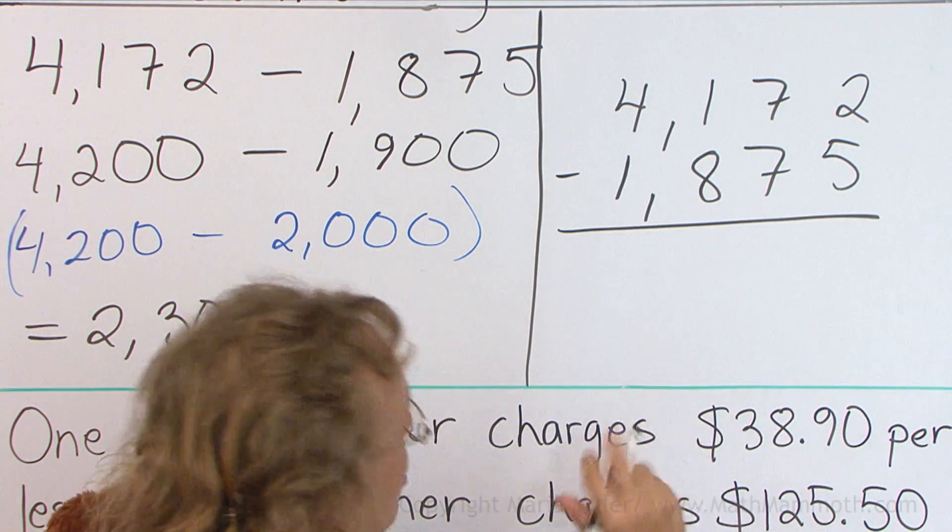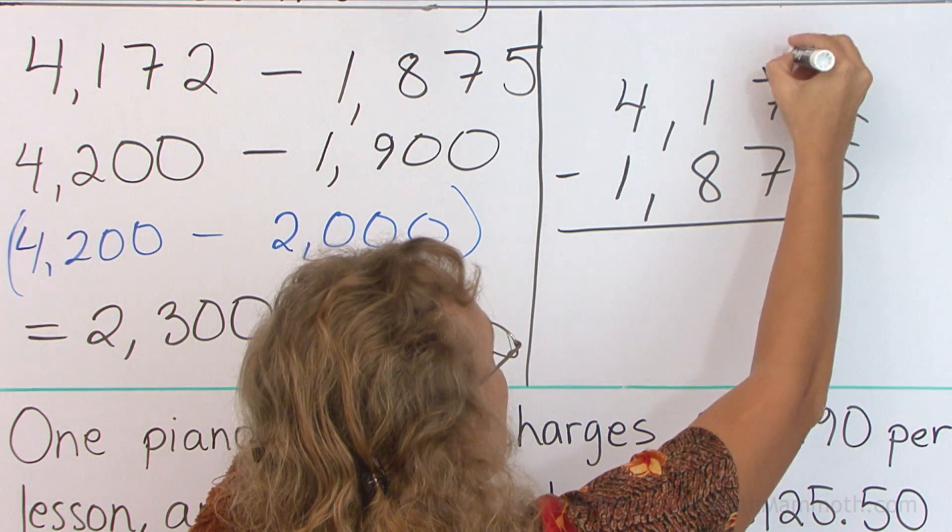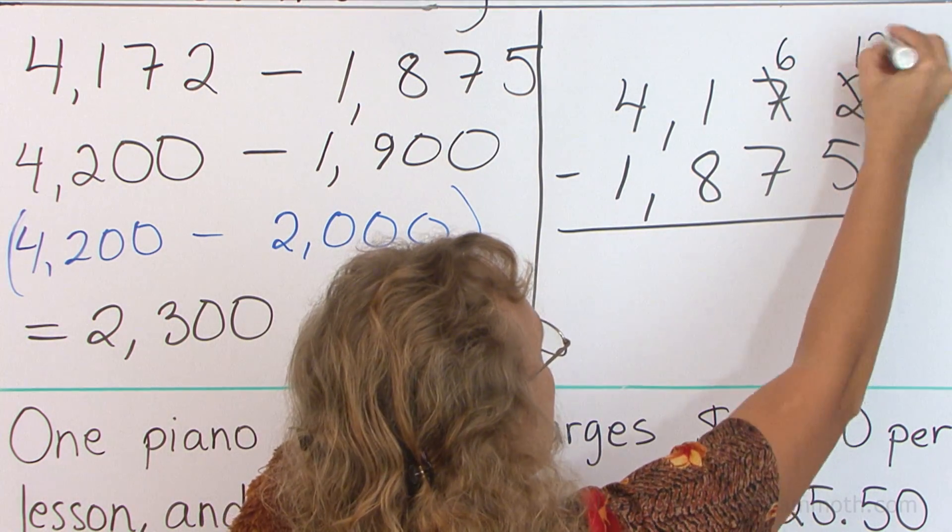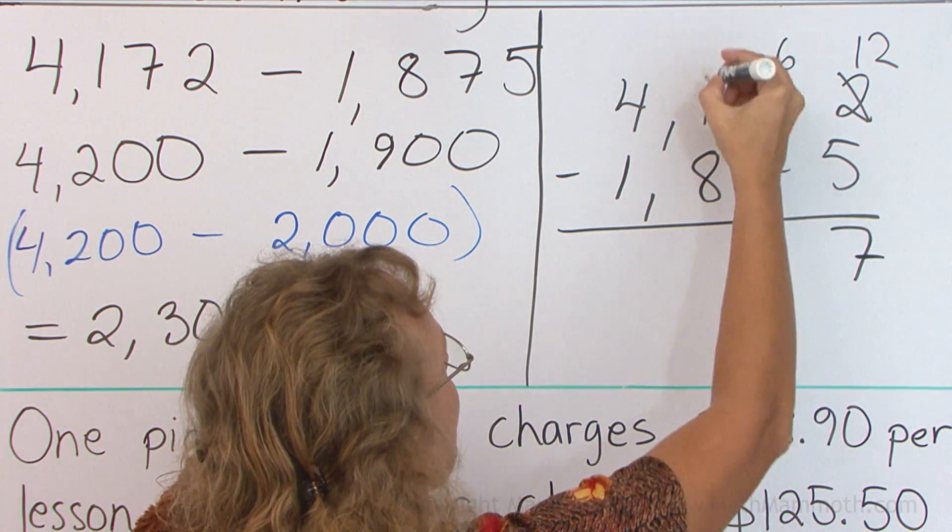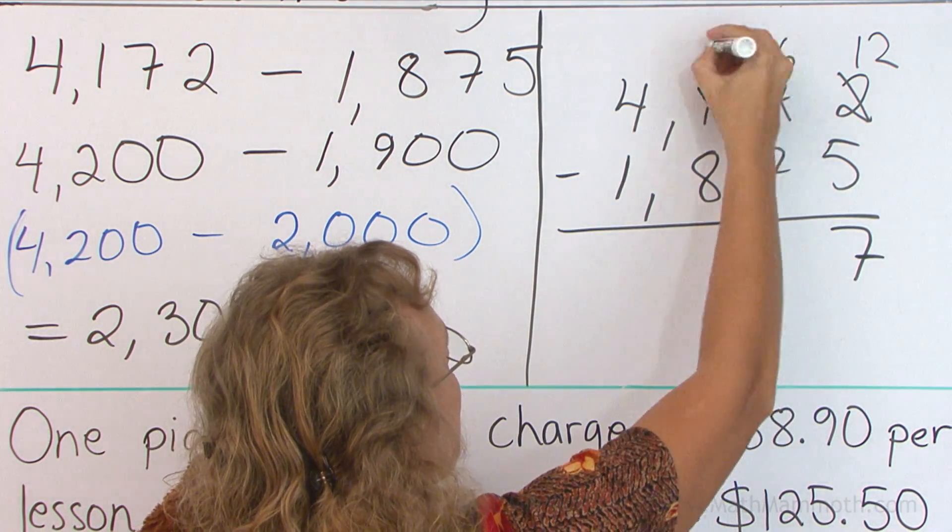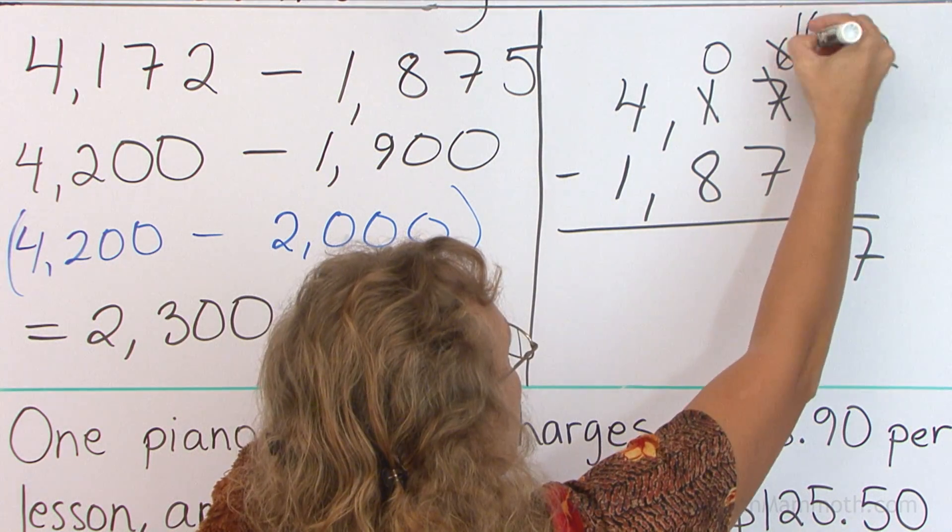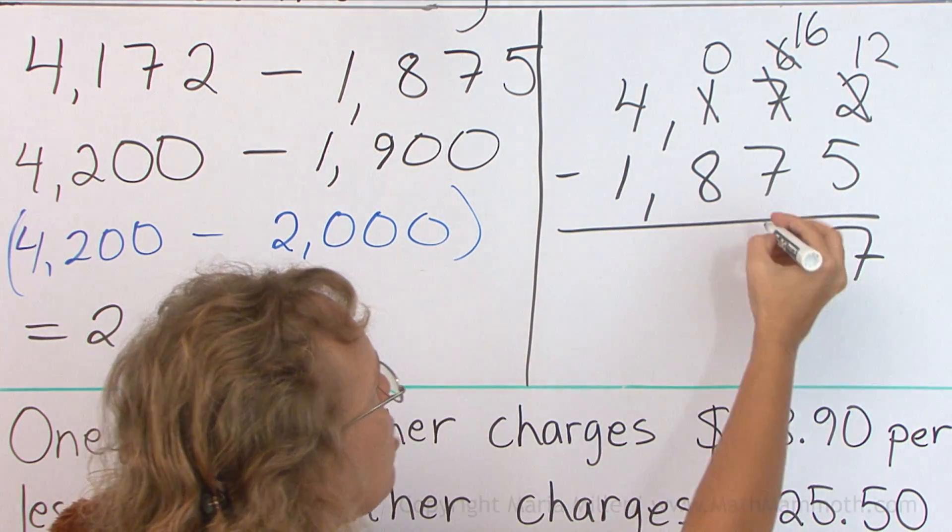All right, two minus five, we need to regroup here, leaving six here, twelve. Twelve minus five, and then six minus seven. Again, we need to regroup. Sixteen minus seven is nine.